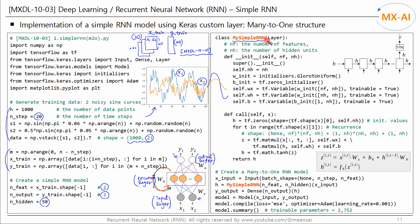Next, let's write a class for the recurrent layer using Keras custom layer. The name of this class is MySimpleRNN, and it inherits from Keras' layer. It takes the number of features and the number of neurons as input. The recurrent layer has parameters WX, WH, and biases. WX and WH are initialized using Xavier-Glorot Uniform, all biases are initialized to 0, and these parameters are shared across all time steps.